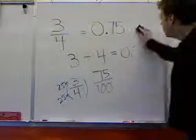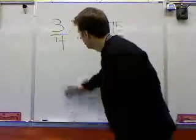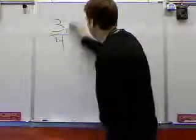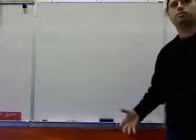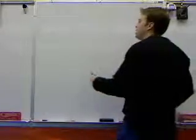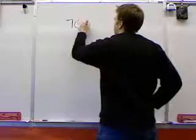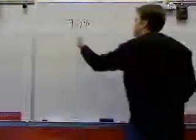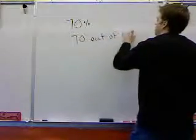The question is, how does this relate to percentages? If we remember correctly, percentage basically means out of 100. So if we have something that's written as 70%, what that simply means is 70 out of 100.